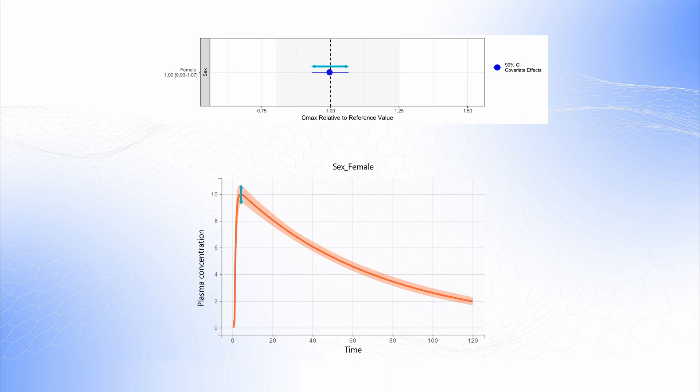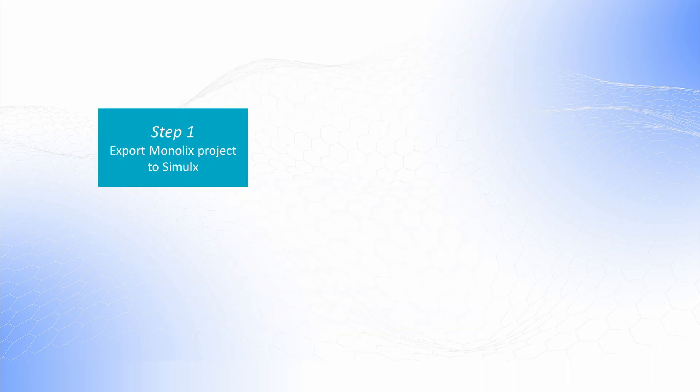This is how to get plot data for a particular covariate. If multiple covariates are present in the model, they are changed one at a time while fixing other covariates at the reference values. To create forest plots using Monolix Suite, we will follow these steps.